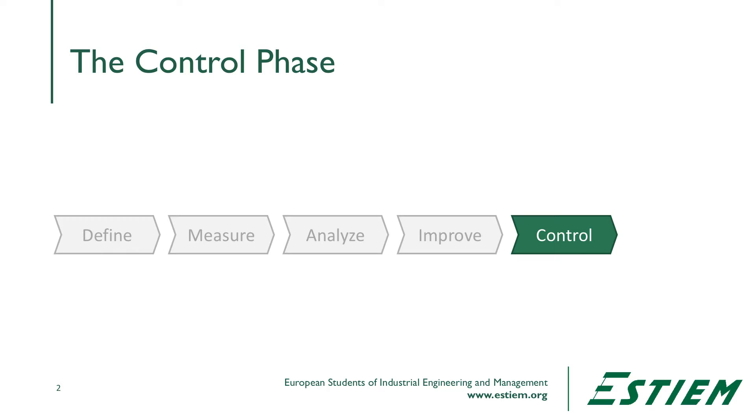Control is the phase where we're reverting from a project approach to improvement back into daily management or the routine work of the organization. What happens in control is we want to be able to sustain the improvement that we've been able to demonstrate in the improve phase.